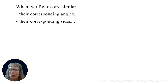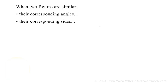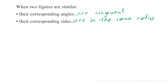First, let's review the basic facts about similar figures. When two figures are similar, their corresponding angles are congruent or equal. And their corresponding sides? They are not congruent, because the sides might be different — longer or shorter — since the figure was maybe shrunk or enlarged. But the corresponding sides are in the same ratio, in proportion.